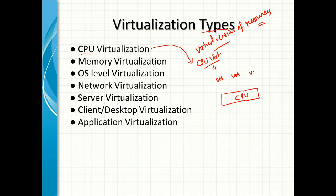As we have already learned about the virtualization concept in the previous session, when virtualization technology is implemented, the hardware resources associated with the physical machine are shared among all virtual instances. This particular CPU will be shared among three virtual machines, and each virtual machine will consider itself as the only machine using the CPU. That is the key point behind understanding CPU virtualization.